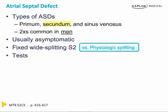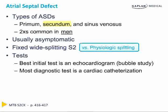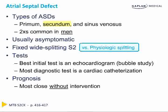The tests ordered for suspected ASD are the same as for VSD. The best initial test is an echocardiogram — non-invasive and can be done at the bedside. If given a choice between echo and echo with bubble study, choose bubble study. The most diagnostic test is cardiac catheterization. Know the difference between the best initial test and the most diagnostic test for every disease on step two. The prognosis for ASD is generally excellent — most close on their own without intervention, and surgery is only considered if the patient develops symptoms or right atrial hypertrophy.